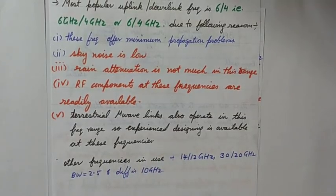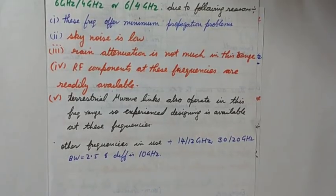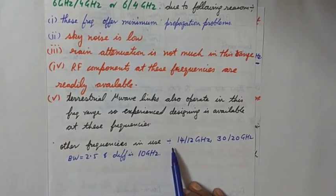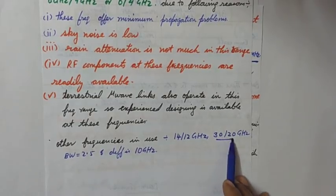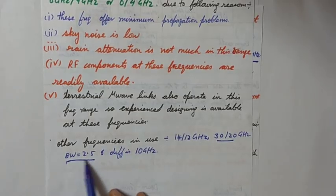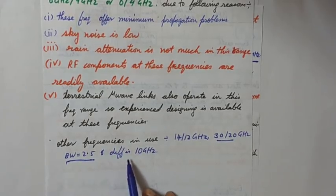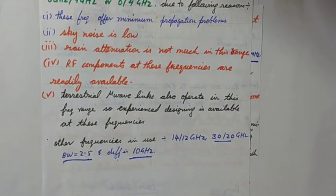Other frequencies which are also in use - since 6 by 4 has been overcrowded by use - the different frequencies available are 14 by 12 gigahertz and 30 by 20 gigahertz. In this the bandwidth is 2.5, means bandwidth is large, and the difference in the frequencies is 10 gigahertz.